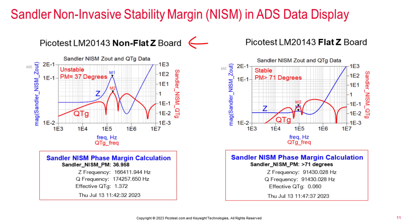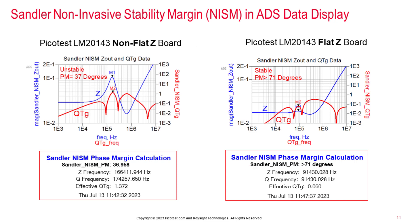The example NISM plots shown here are for the LM20143 buck regulator with two different PCB decoupling designs. The one on the left has an impedance that is non-flat with a resonant peak, resulting in poor stability. The data on the right is for a flat impedance design with no resonant impedance peaks and greater than 65 degrees of stability. It's really quite simple. Now let me show you a little bit about how NISM works and some tips on how to use it.